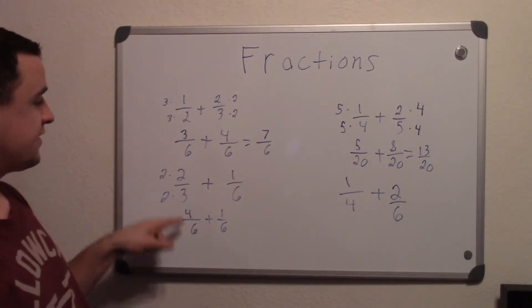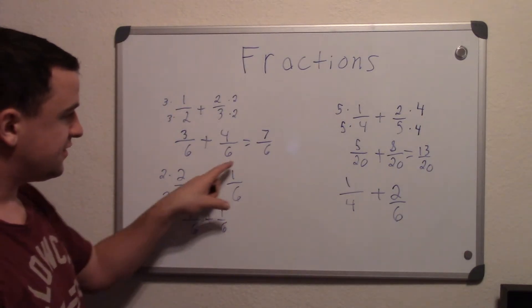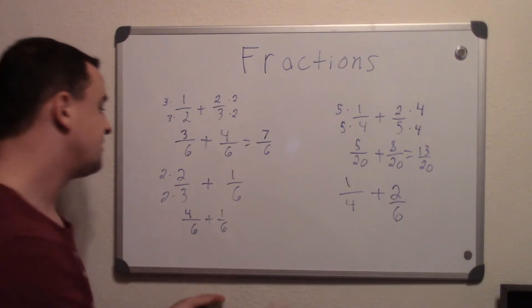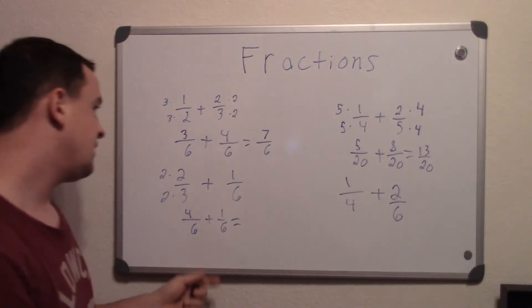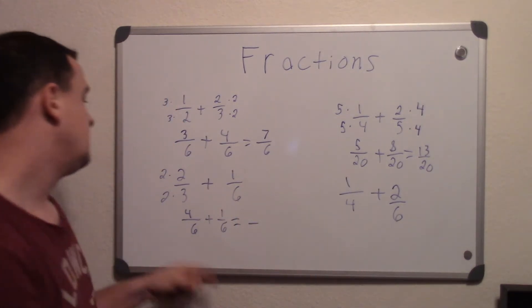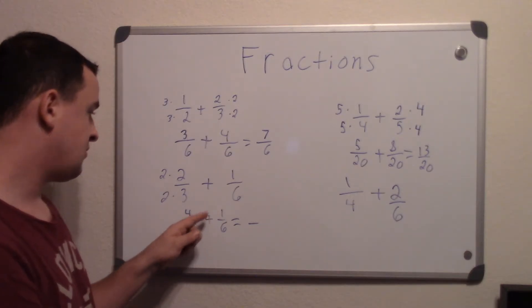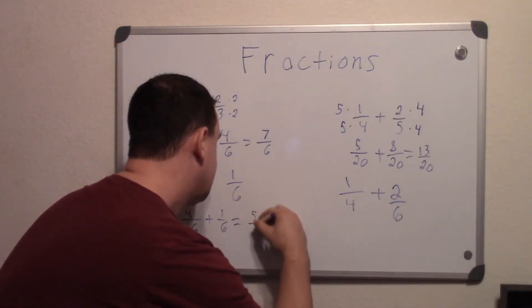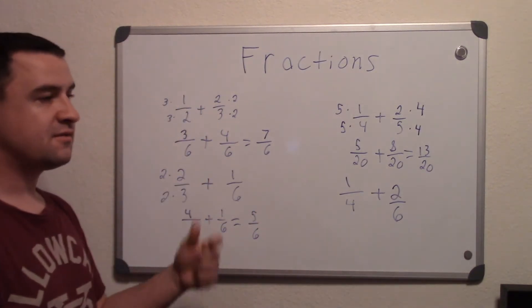So again, 4/6 is the same thing as 2/3, so this is still the same ratio to each other. And now again, add them, and we get 4 plus 1 is 5, and the same like bottom number, and the answer is 5/6.